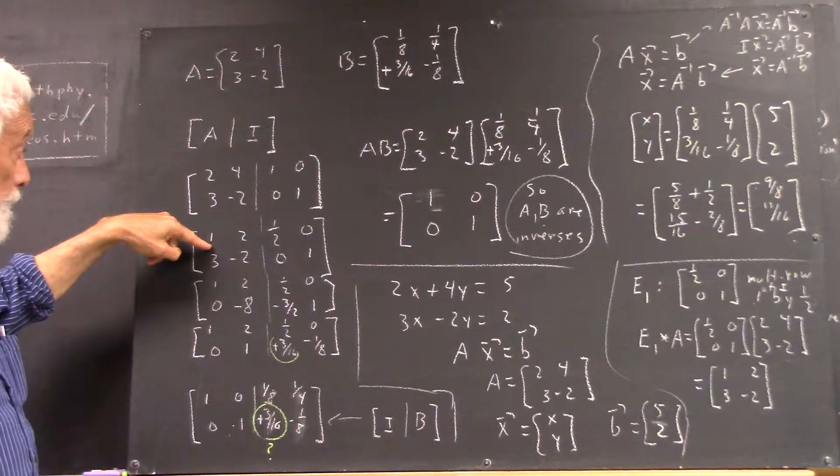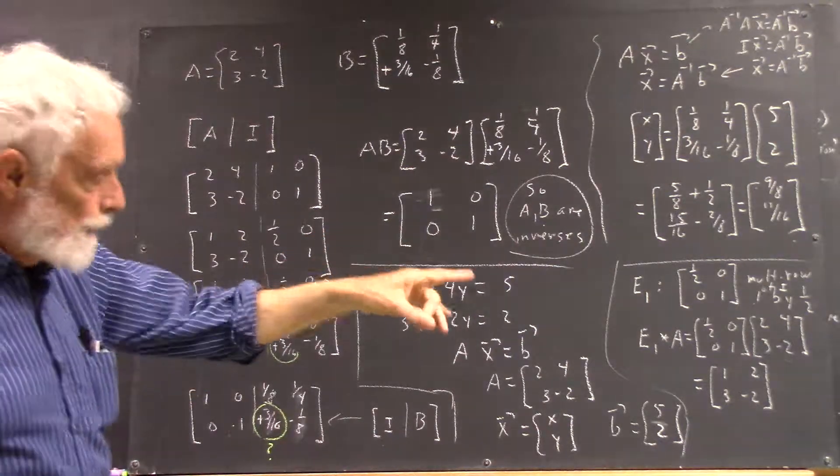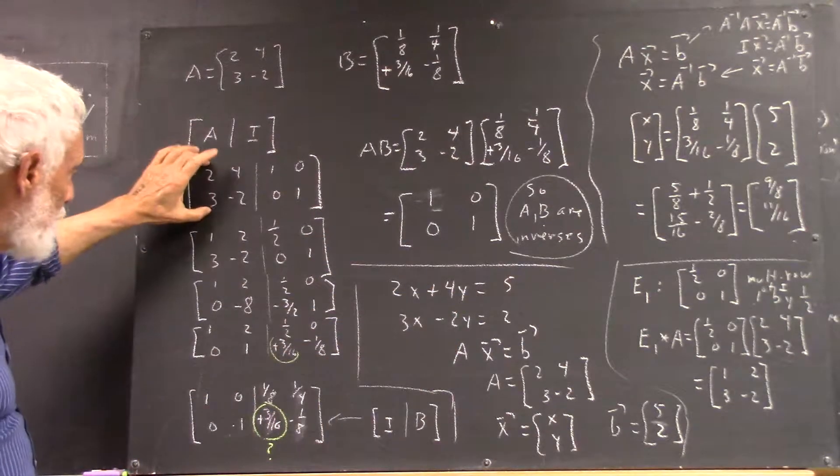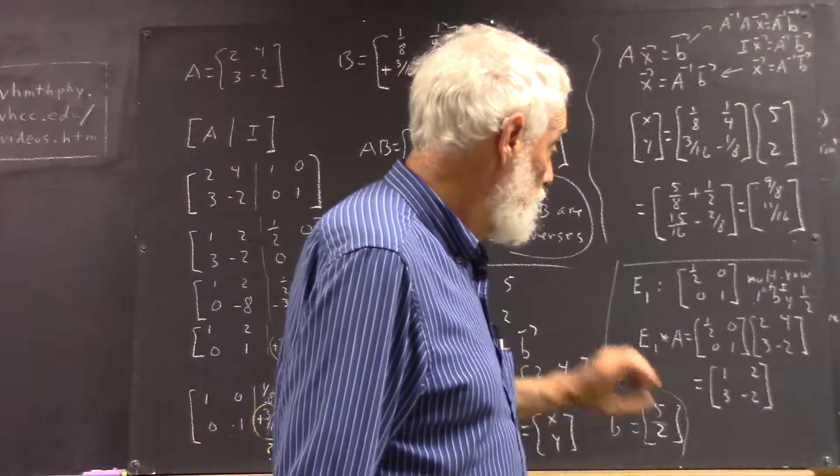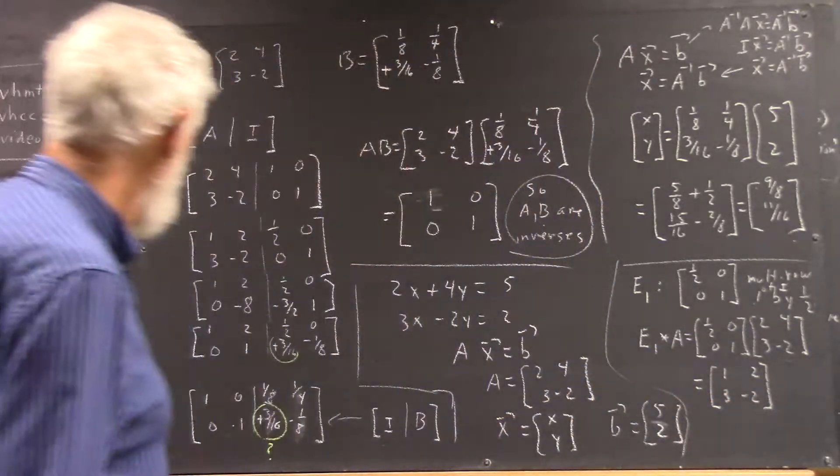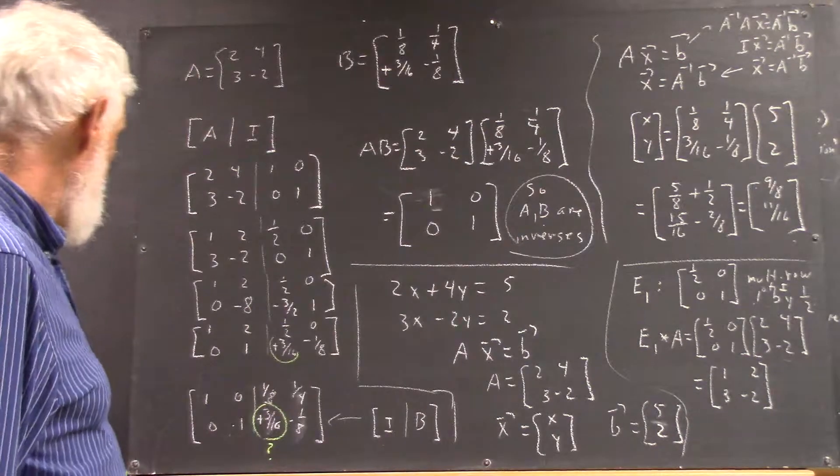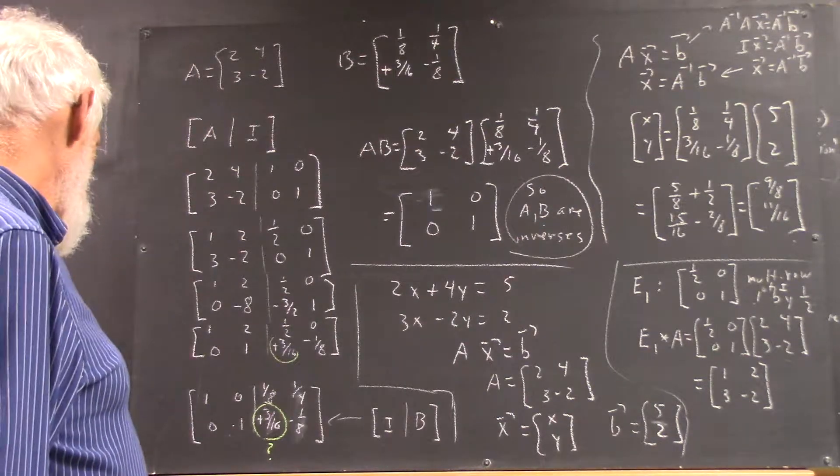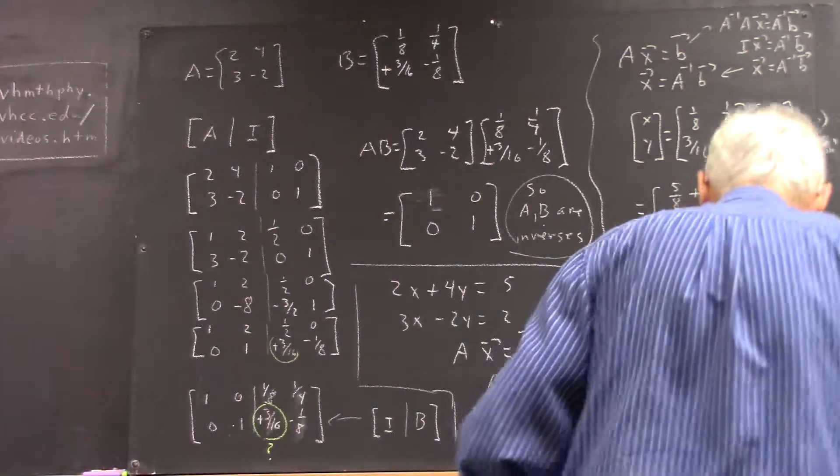So that was kind of neat. We did the operation to the identity matrix that we did to this matrix in order to get this, giving us this matrix, which we then multiplied by our original matrix to get this matrix. Well, this always works. So, we go on.